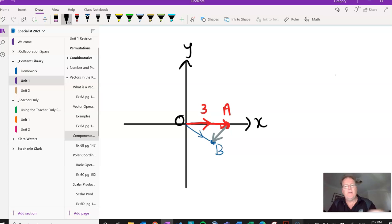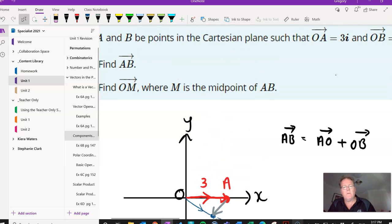So in order to find vector AB, we are going to move from A to O. So AO, we have to go along AO, and then we have to go down OB. So we go from A to B. Now you'll notice that I've got AO. Now we've defined OA as 3I.